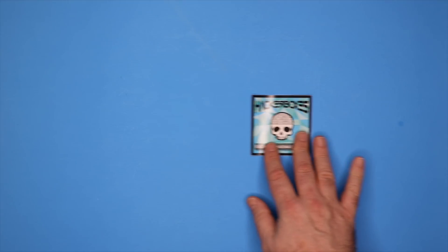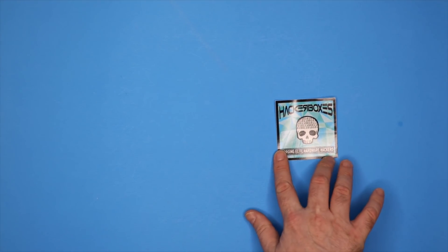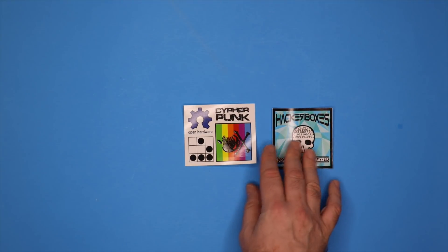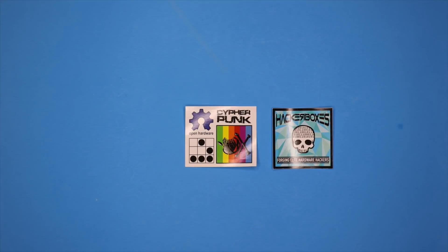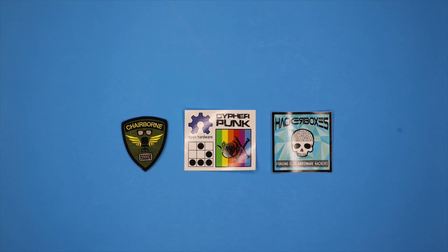We have some really nice swag items in this box. We have the Hacker Box branded Forging Elite Hardware Hacker's decal and a quad decal that has four small decals on it that can be cut out and used and then we have a Chairborne Ranger patch which is an iron on patch you can iron onto your bag or jacket or hat.